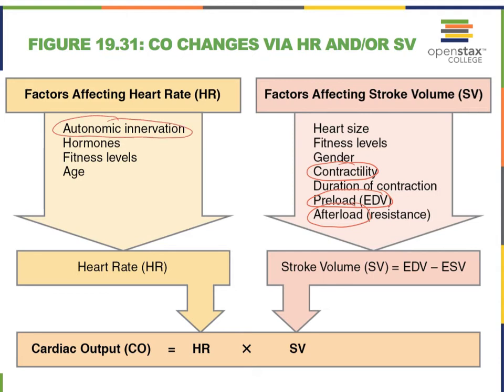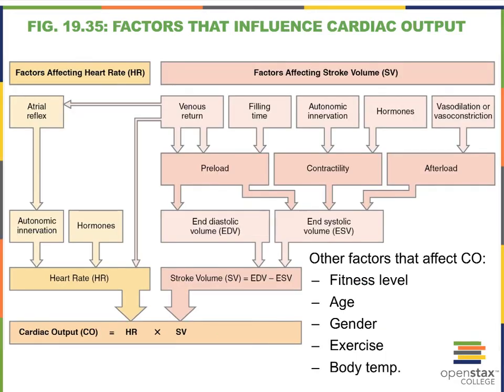The sympathetic nervous system and the parasympathetic nervous system change the heart rate, as do hormones produced by the adrenal medulla and our thyroid gland. Let's not forget that fitness level and age can also really impact our heart rate.